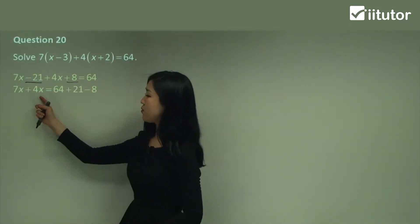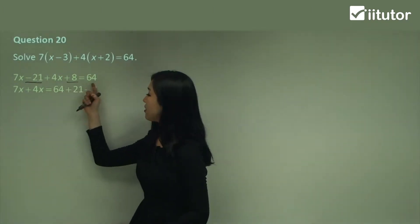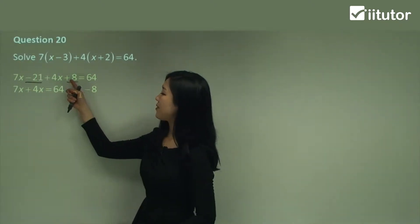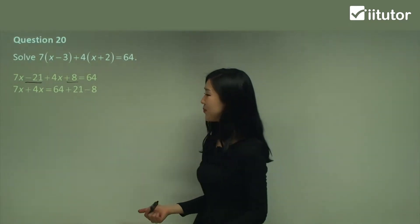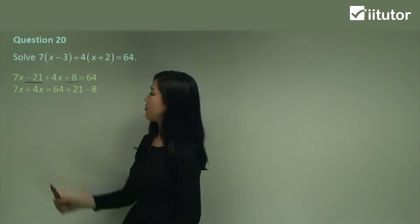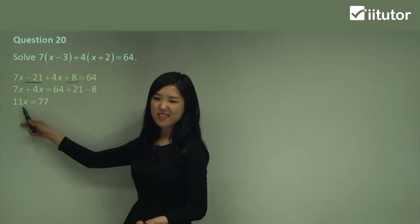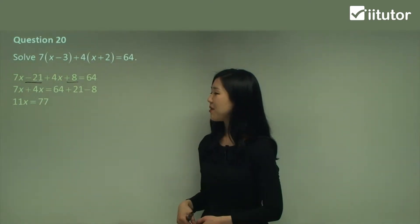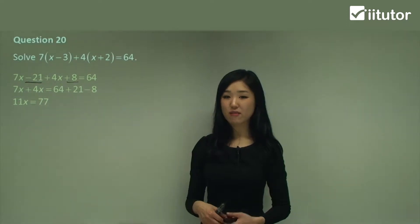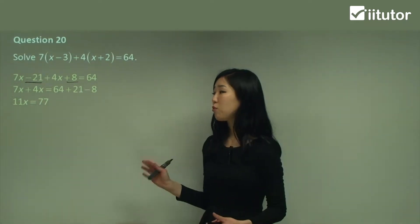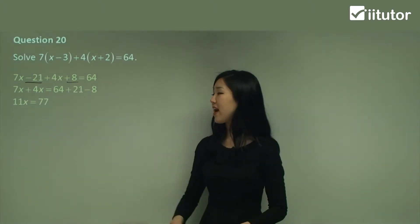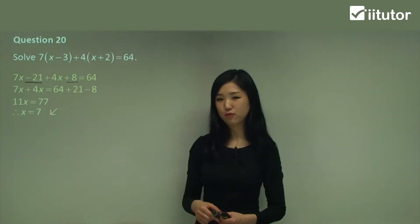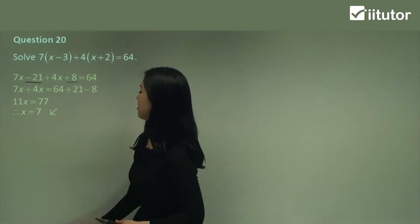I have 7x plus 4x left on my left and I'll have 64 plus 21 because that's negative, must be positive 21 here and because that's positive 8 I'm gonna make it negative 8. Now simplify it. So 7x plus 4x is 11x and calculate this guys 64 plus 21 minus 8 is 77. Now we have 11x equals to 77. What's the opposite of multiply? Divide. So x is simply 77 divided by 11 which is simply 7.